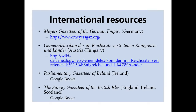There are gazetteers for places outside of the United States as well. The Meyers Gazetteer of the German Empire covers Germany's borders around the year 1900 and is a searchable database. There is a similar book for Austria-Hungary called the Gemeinde Lexicon, though it is not a searchable database — just a digitized book. You can also find gazetteers for places like Ireland, England, and the British Isles, widely available online as digital books on Google Books, for example. You can locate them by searching for the place you're interested in followed by the word 'gazetteer.'